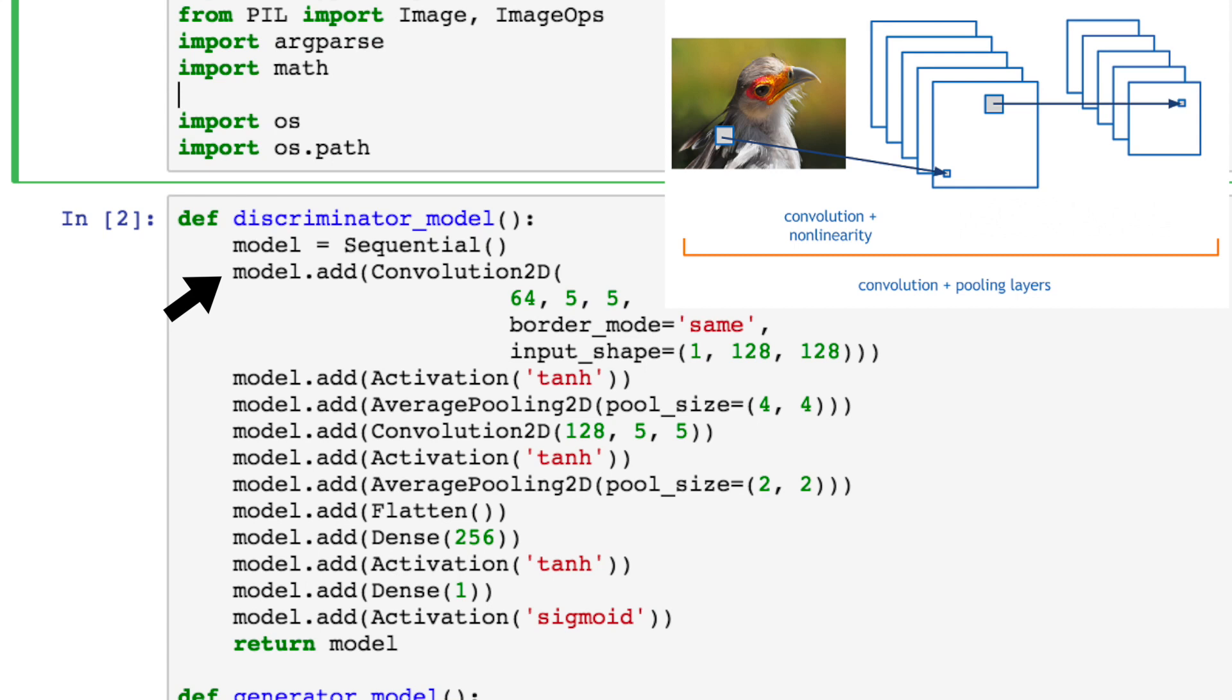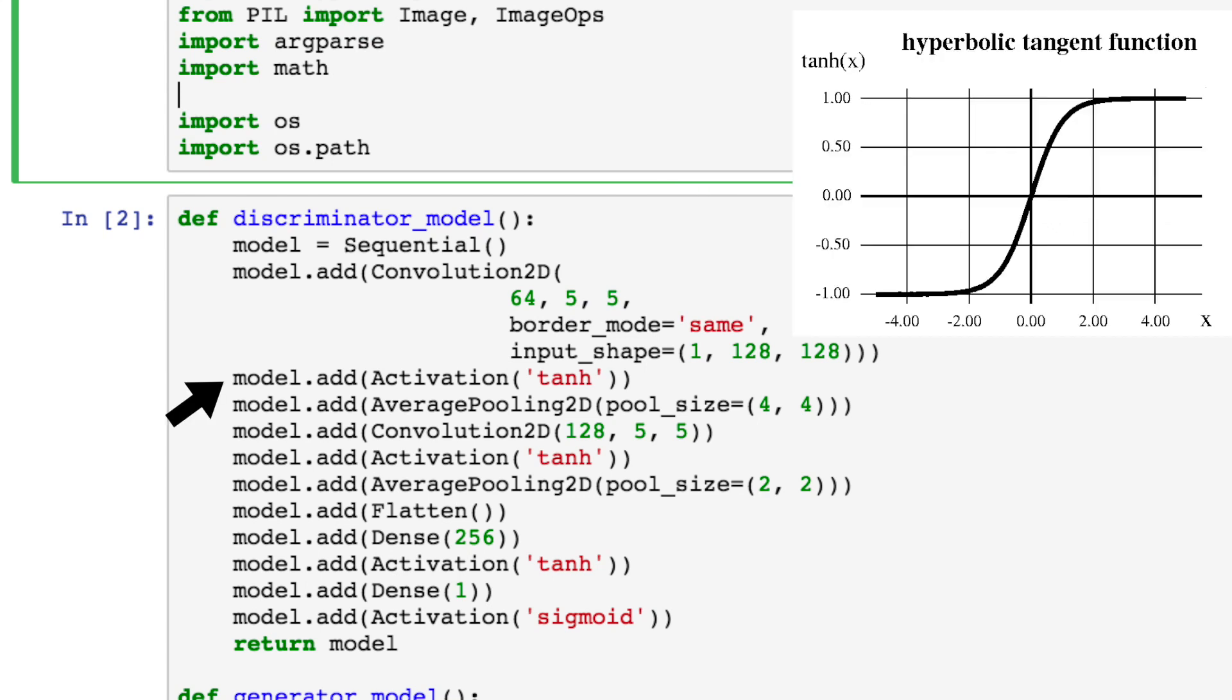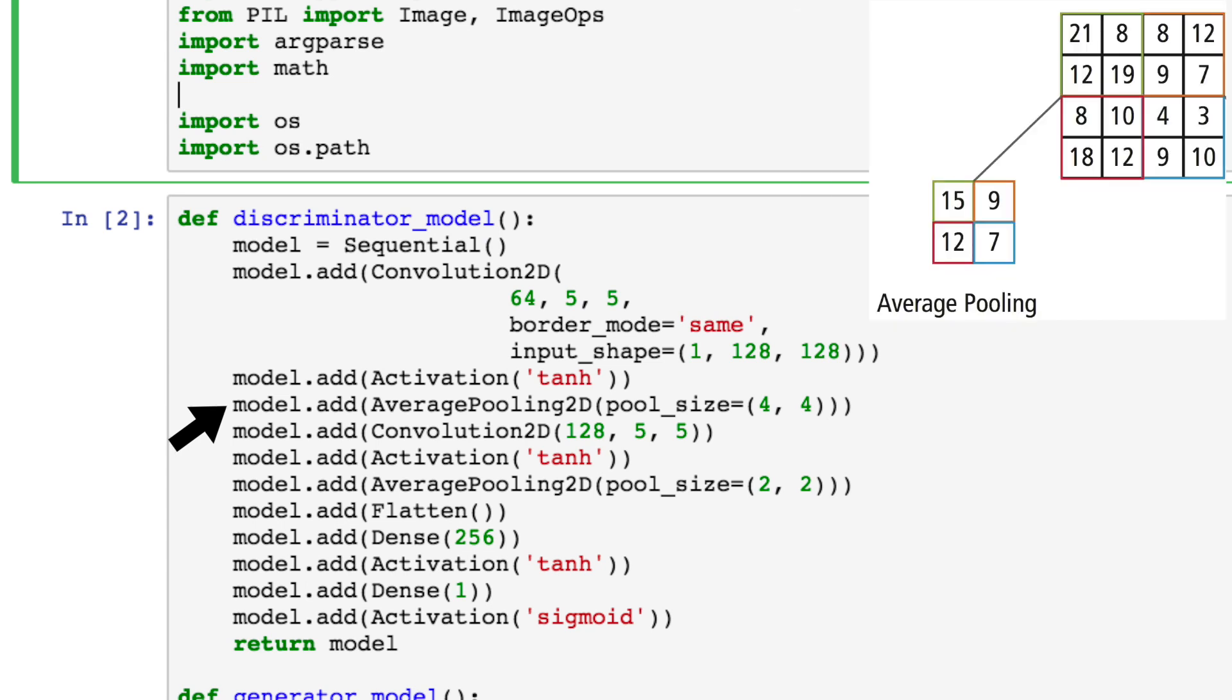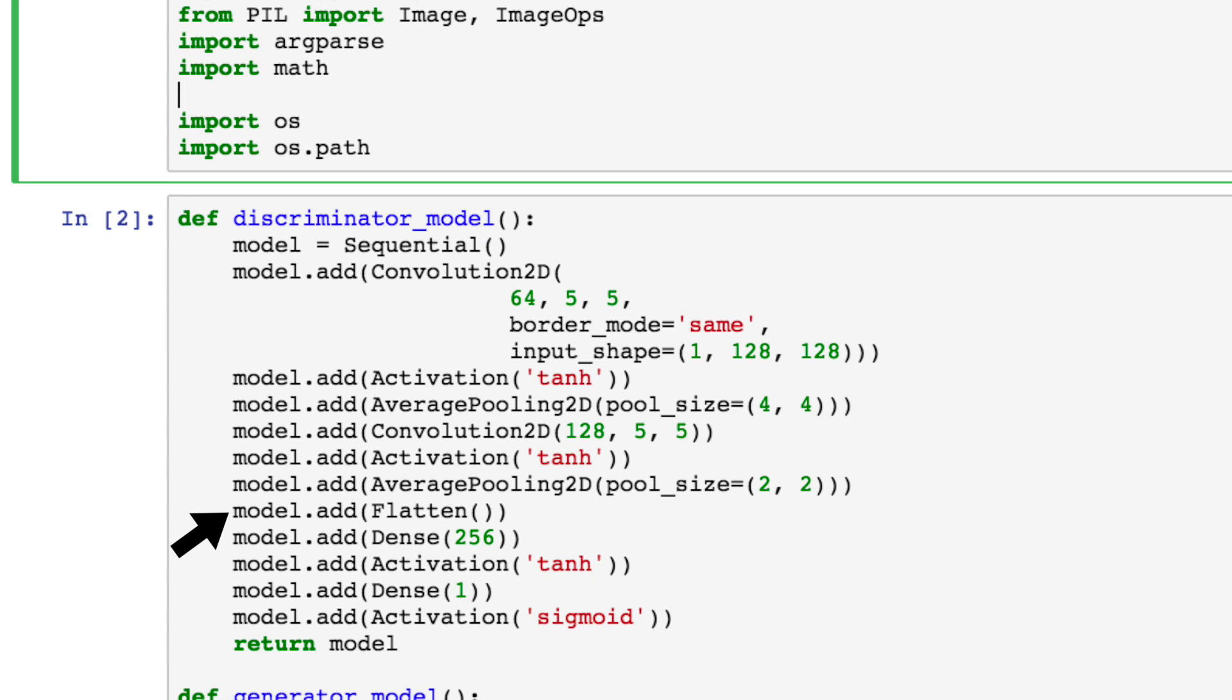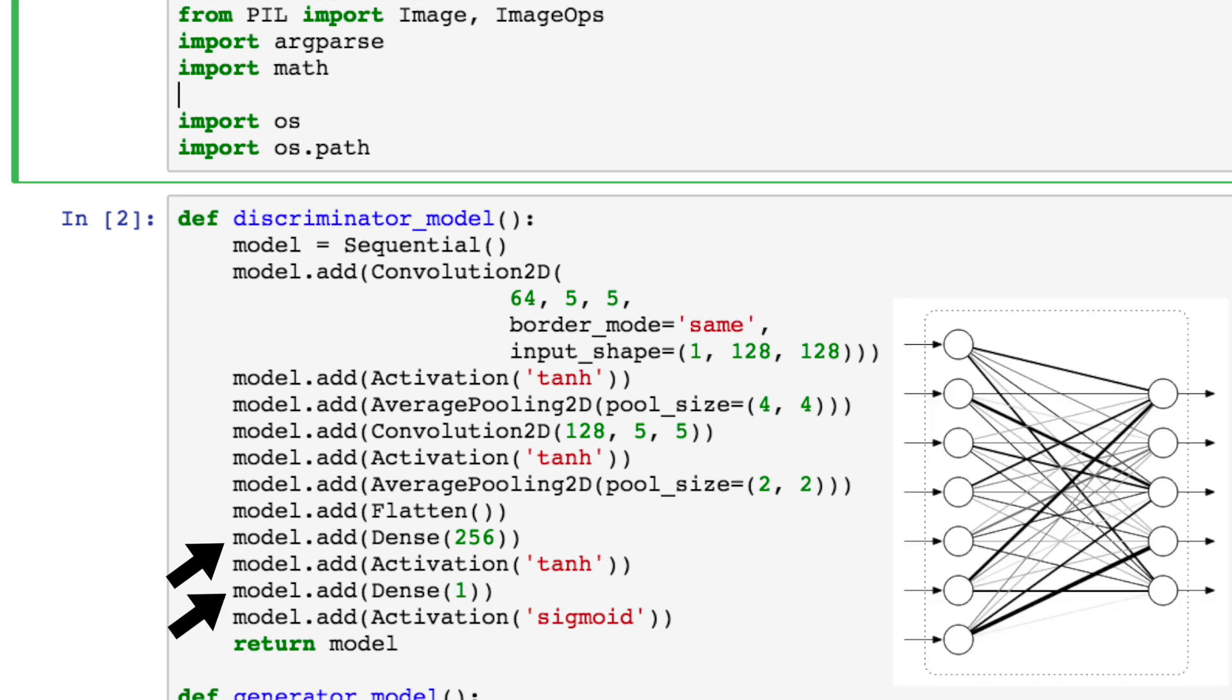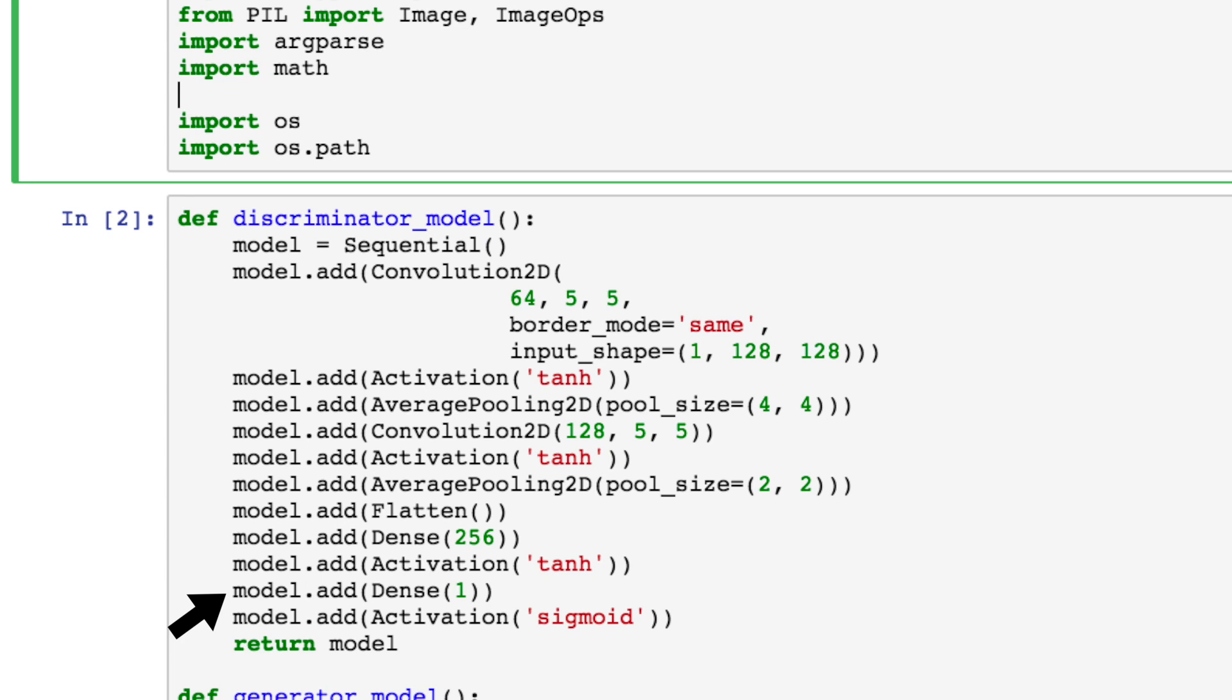That means a convolution to extract the feature map, followed by the tanH activation function, to squash real numbers into a range between negative one and one, which lets our model learn more complex functions than just linear regression. Then, a pooling layer. Pooling reduces the dimensionality of each feature map, but retains the most relevant information. We'll flatten the feature map into one dimension, then apply two fully connected layers to it. The last dense layer outputs an n-dimensional vector, where n is the number of classes we have, so it would be two in our case. And by applying a sigmoid to it, it will convert the data into probability values for each one.